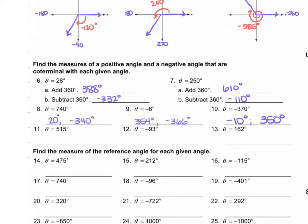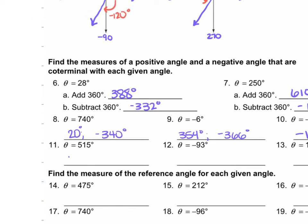For number 11, we're given 515 degrees. We take 515 and subtract 360 because it's larger than 360, giving us positive 155. That's our positive coterminal angle. From there, 155 minus 360 gives us negative 205 degrees. So those are our two coterminal angles.